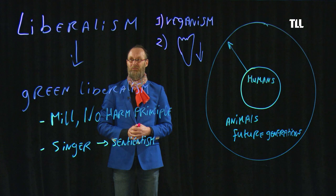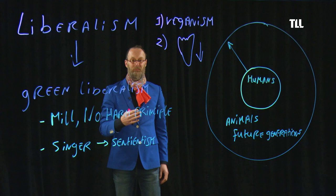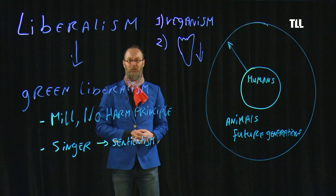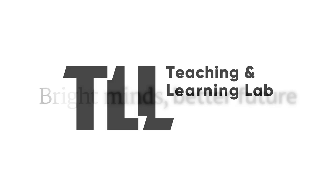So that is the big question of our times: Are we liberals? Do we want to stick to anthropocentric liberalism, thereby discriminating against non-human animals and future generations? Or are we prepared to face the challenge and move on towards green liberalism? Thank you.